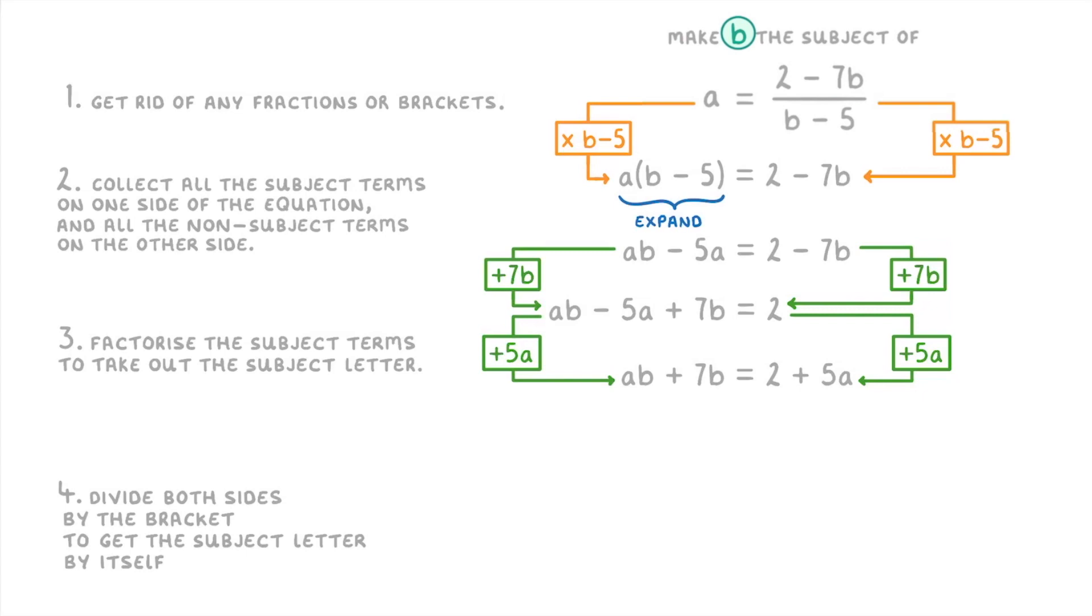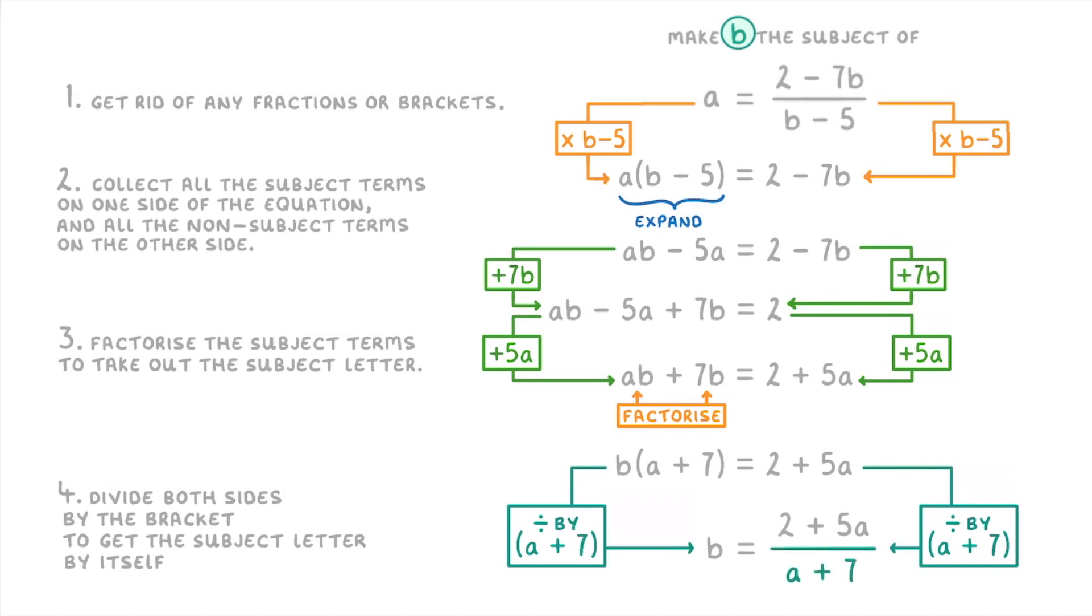Now that we have our subject terms on the left we can move on to step 3 and factorize them to take out that common factor of b. So we'd get b and then in brackets a plus 7 equals 2 plus 5a. And then finally for step 4 we just divide both sides by the a plus 7 to find that b equals 2 plus 5a divided by a plus 7, and that's it.